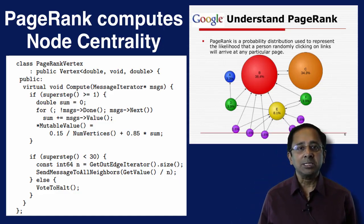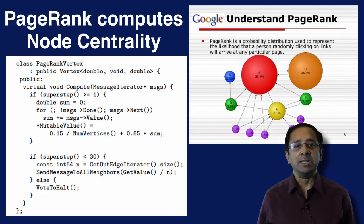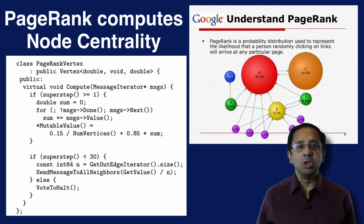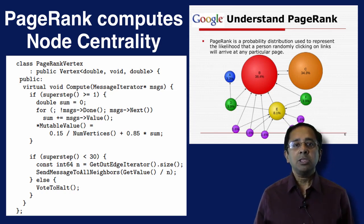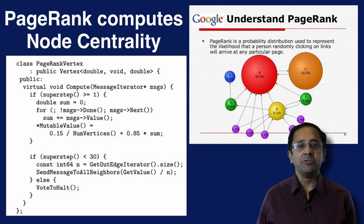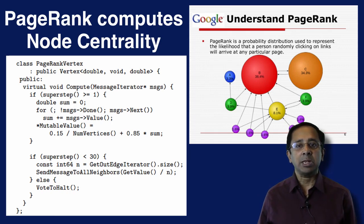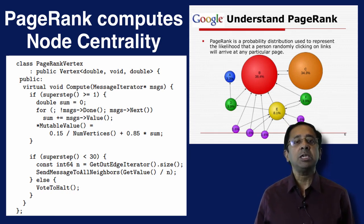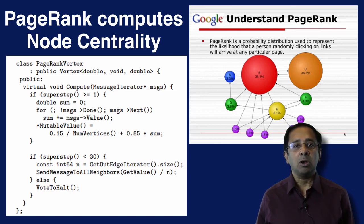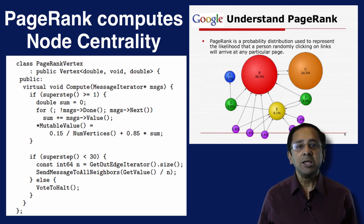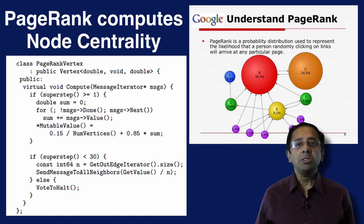PageRank's task is to compute node centrality. The basic philosophy is that a node connected to an important node gains more importance. In the figure on the right, B is a very important node with a high PageRank because many nodes directly or indirectly point to it. So C, being B's direct neighbor, also has a high PageRank, even though C itself does not have too many incident edges.